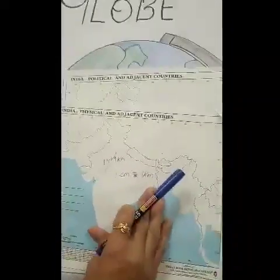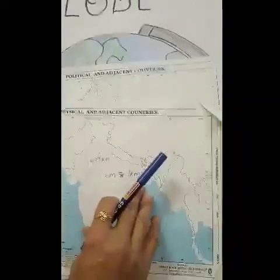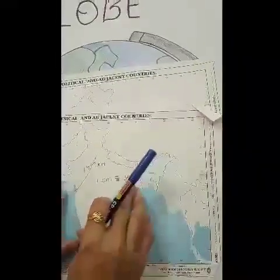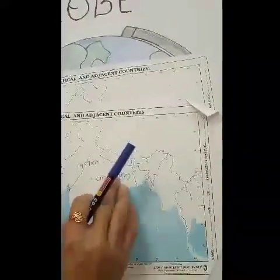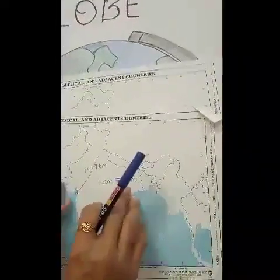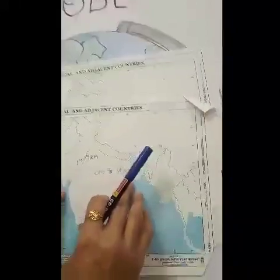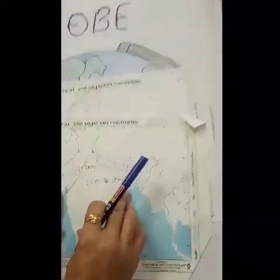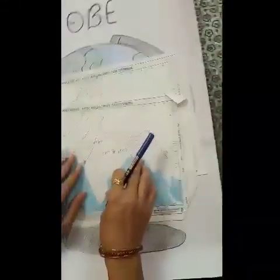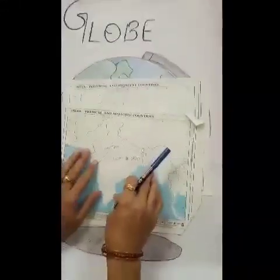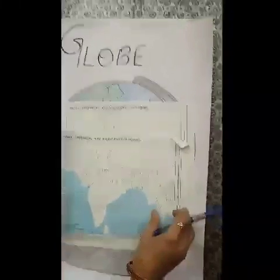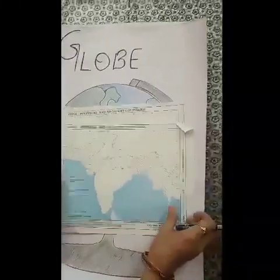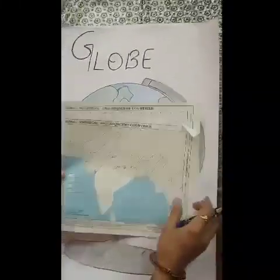The third type is thematic maps. In thematic maps, we can show specific information like crops, rivers, minerals, population and railway networks.